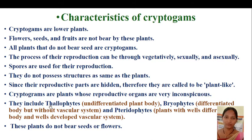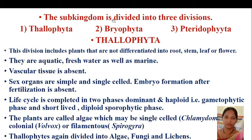Cryptogames are divided into three types. First, thallophytes, which have an undifferentiated plant body, further divided into algae, fungi and lichens. Second, bryophytes, which have a differentiated body but without a vascular system — there is a total absence of tracheids and vessels. Third, pteridophytes, which are well differentiated into root, stem and leaf, and possess a vascular system of tracheids and vessels. These plants do not bear seeds or flowers like higher plants.